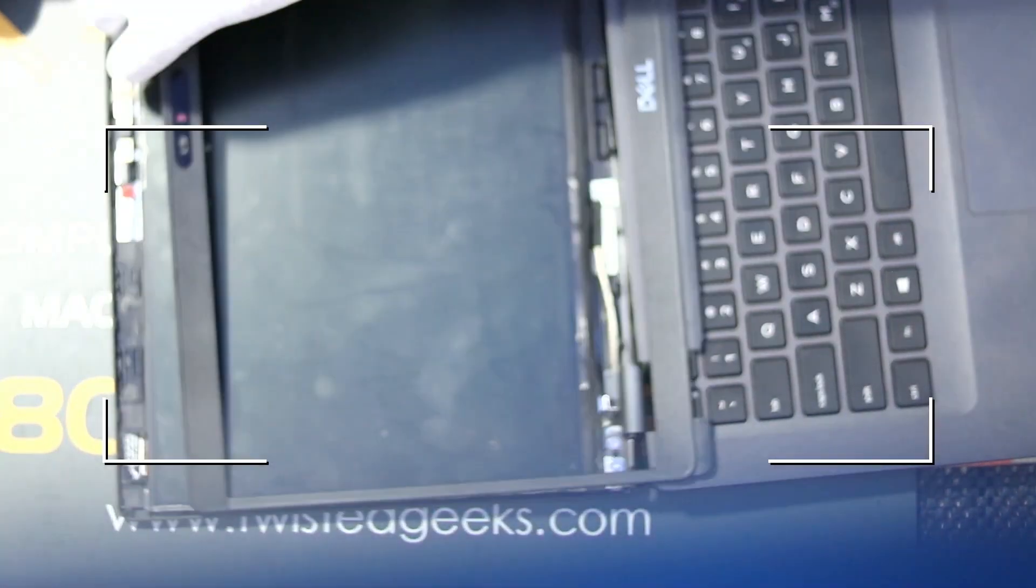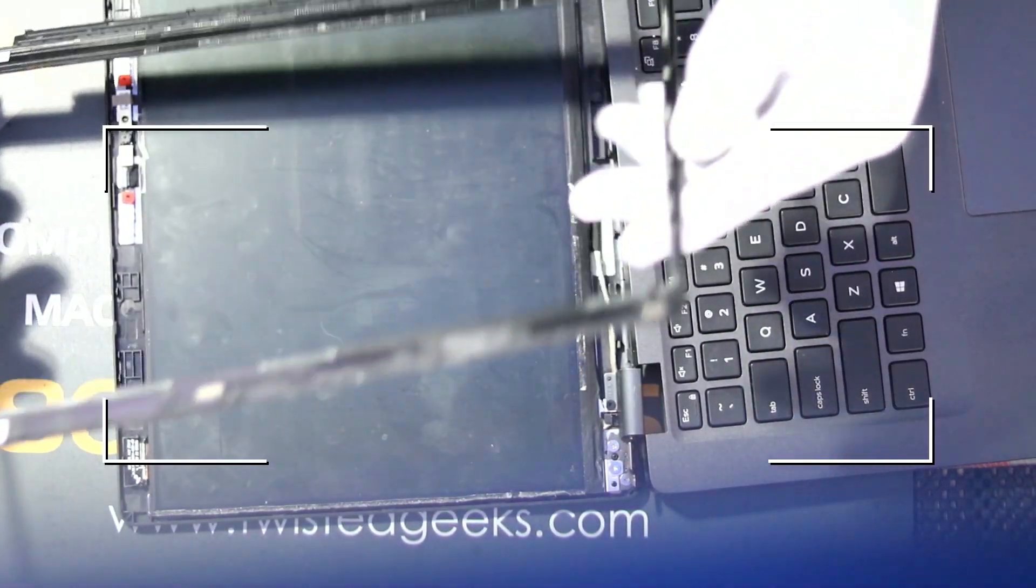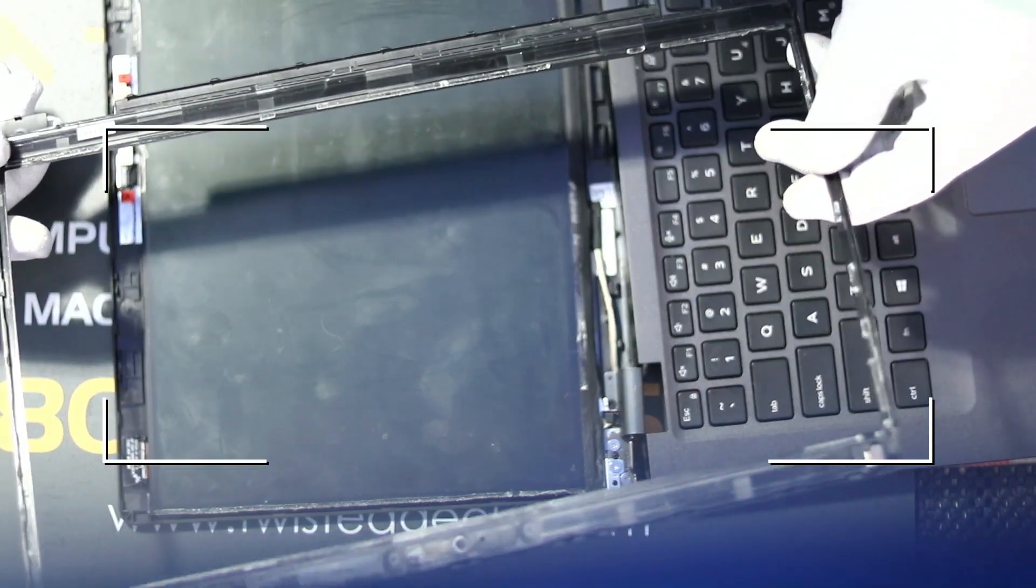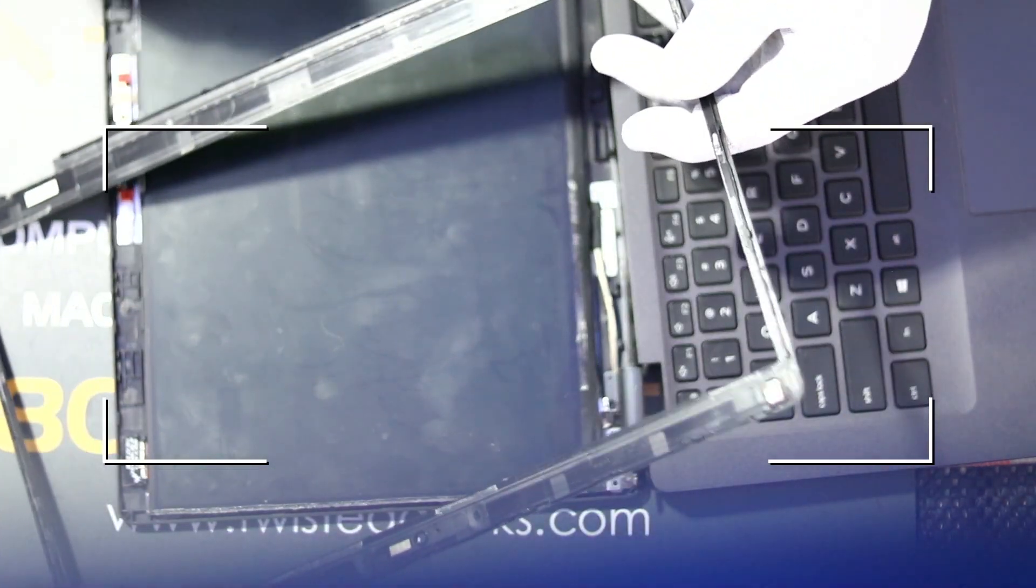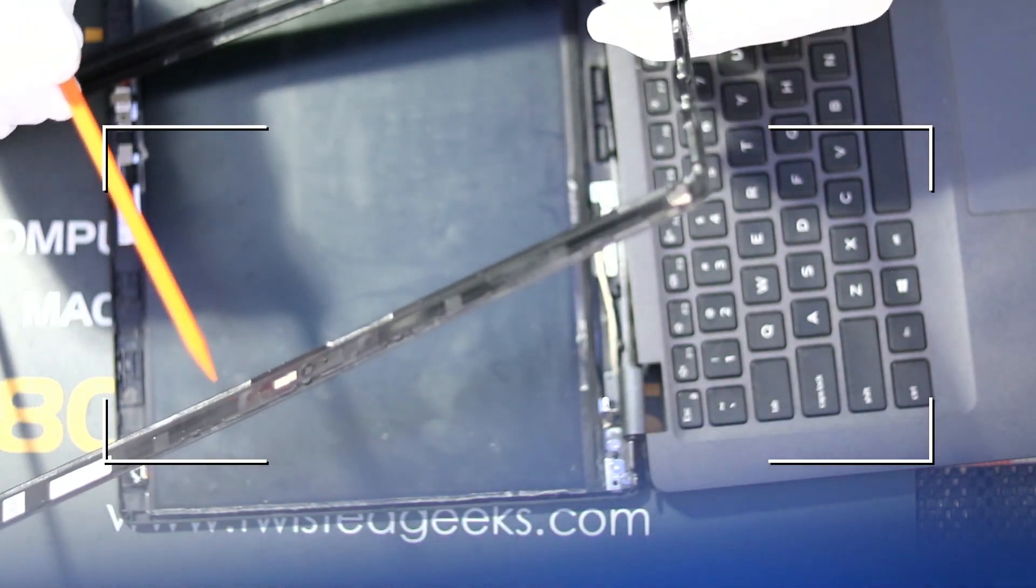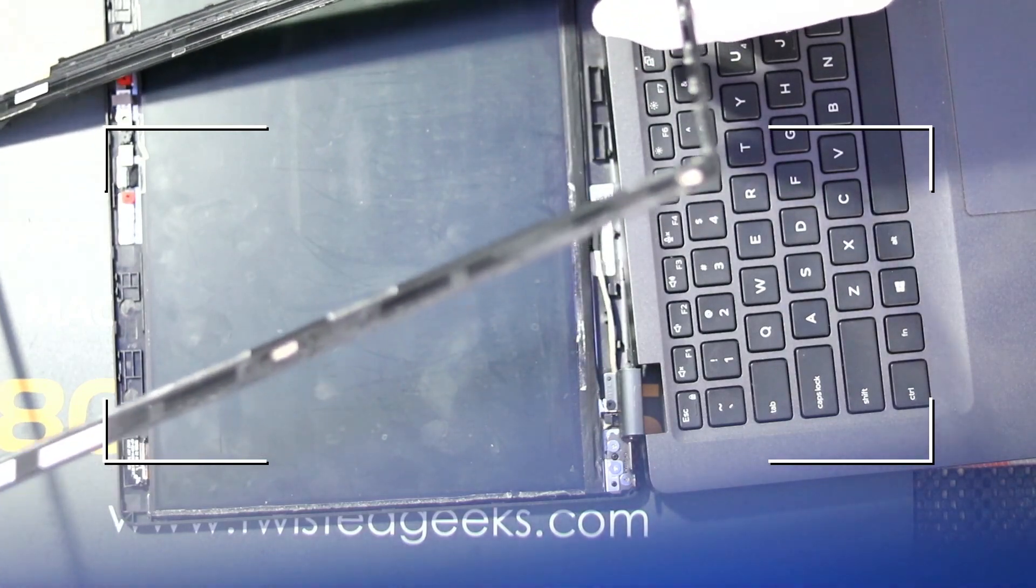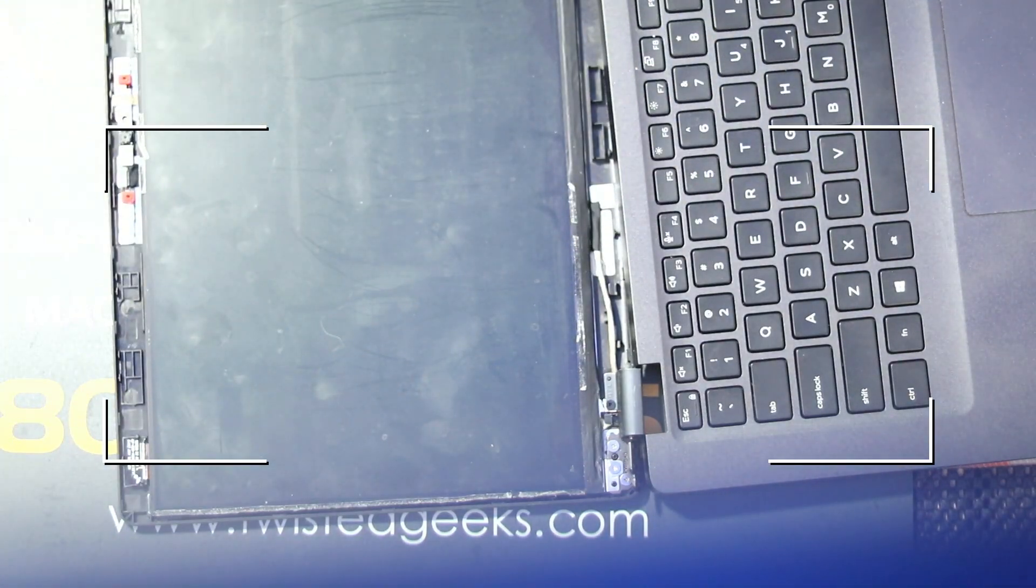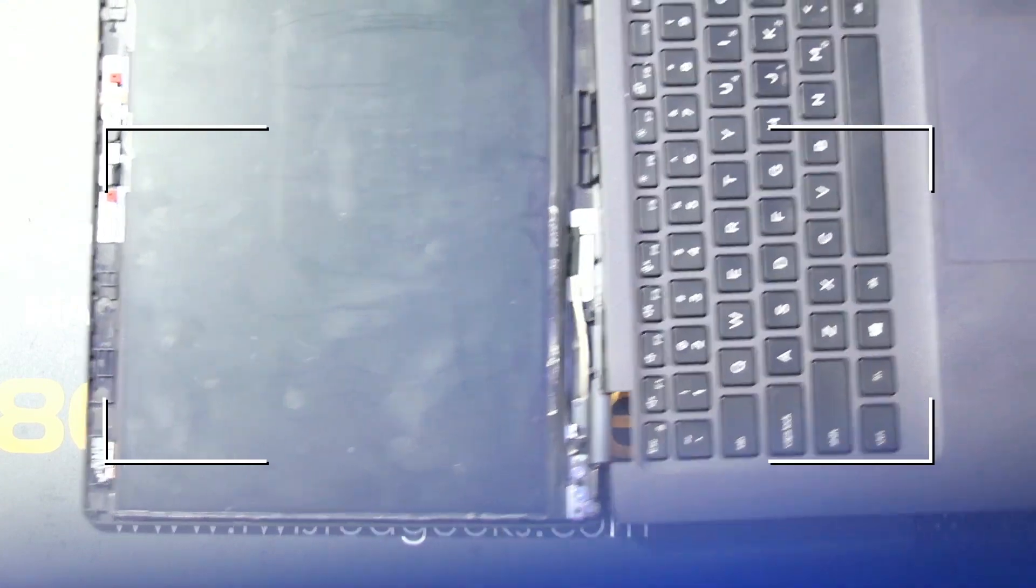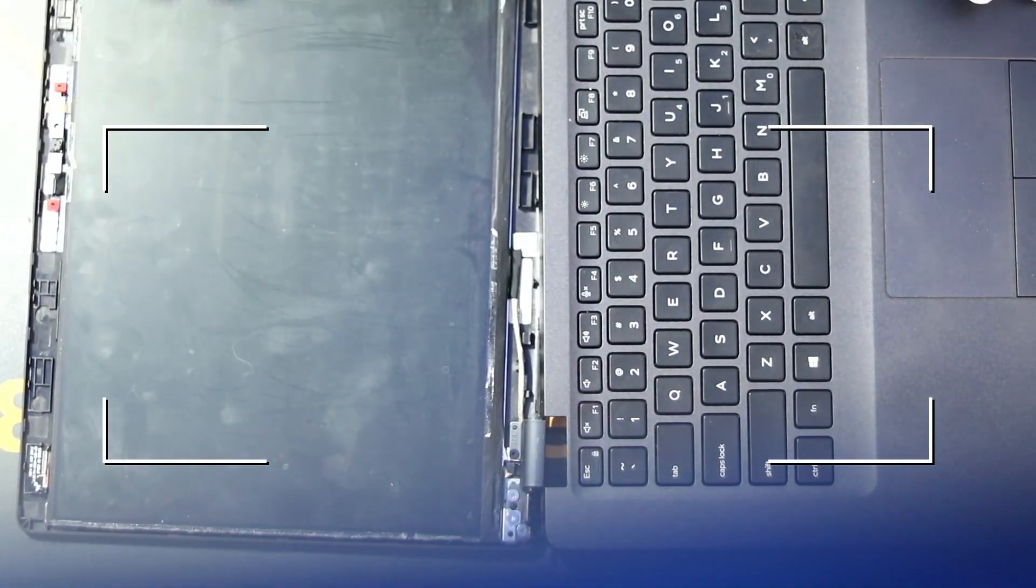There you are. This is just basically all clips that clip in and then a little bit of adhesive that's under. You can put this back on fairly simple. Shouldn't be a big deal. Now this is the screen itself.